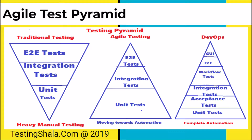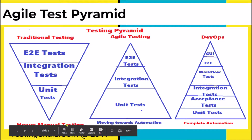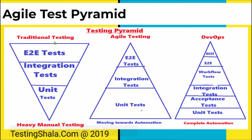In traditional testing, where manual testing is the focus — this is nothing but the waterfall model — unit testing is done very minimally, then followed by integration testing which is a little higher than unit testing, and then the entire testing effort is adopted in end-to-end testing. This is where more manual execution happens, which is the traditional waterfall model.